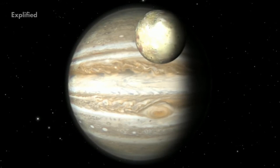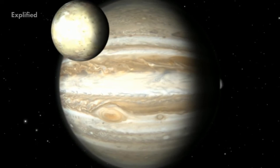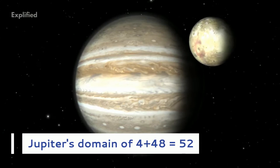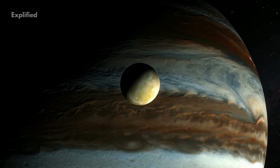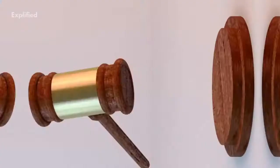'Let us add that perhaps Jupiter also has several moons around itself that until now have not been seen with any glass. Above this, to us unrevealed, position arises Jupiter's domain of 4 plus 48, which is 52, and Saturn's at 4 plus 96, which is 100 units. What a praiseworthy relationship!'